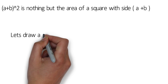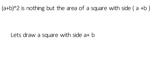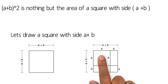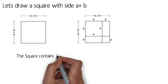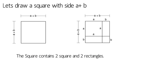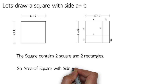Now let's draw a square with side a+b. Now let's divide this square into small parts using a and b. If you observe, the square contains two squares and two rectangles.